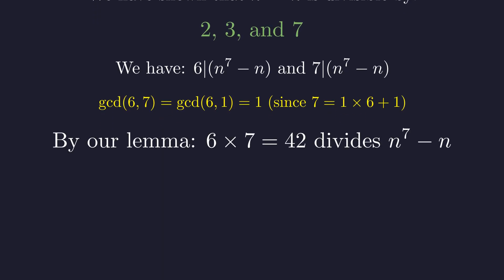Since 6 and 7 both divide our expression, and they don't share any factors, their product 42 must divide it too. And that completes our proof.